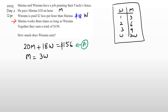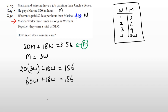Once we have M equals 3W, substitute into the first equation: 20 times 3W plus 18W equals 156, giving 60W plus 18W equals 156, so 78W equals 156. Dividing both sides by 78 gives W equals 2.